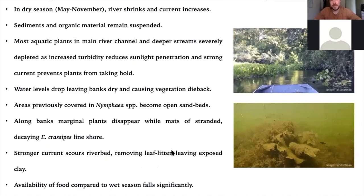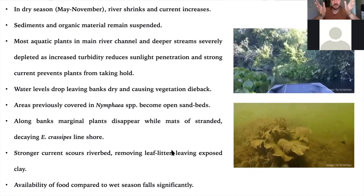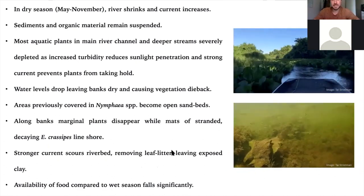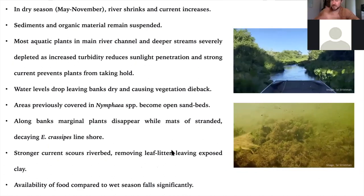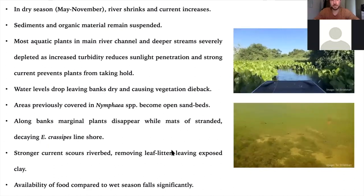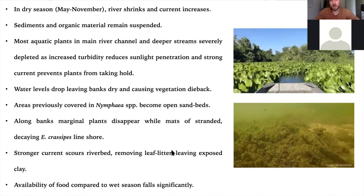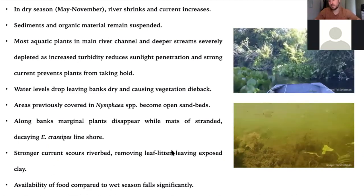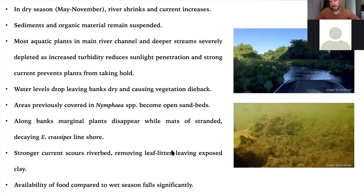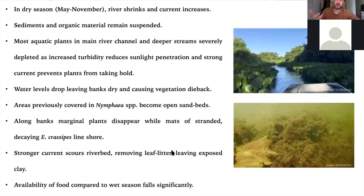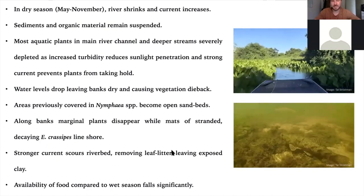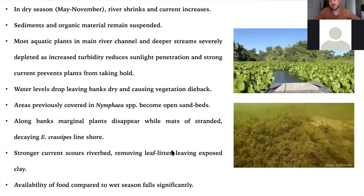In the dry season, from the end of May to November, the river channel shrinks and current increases as water retreats from the countryside back into the main channel. The increased current keeps sediment in suspension, so water remains quite turbid and murky, restricting sunlight penetration and causing aquatic plants to die back. As water levels fall, marginal plants are left to dry out, water lily beds are replaced by exposed sand, and leaf litter is lifted and carried away, leaving the riverbed much less diverse in macro habitats.